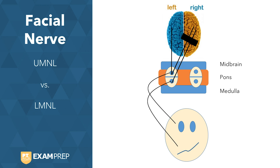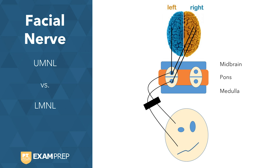Now let's look at a different example — a lower motor neuron lesion. We can see that nothing is getting through despite the fact that there is dual innervation. Where that lesion is, it blocks innervation to both the upper face and the lower face, so we get a drooping forehead and mouth. It's really important to know that the reason the upper part of the face is spared in an upper motor neuron lesion is because there is dual innervation by the motor cortex to the upper part of the face.